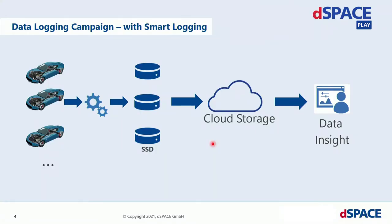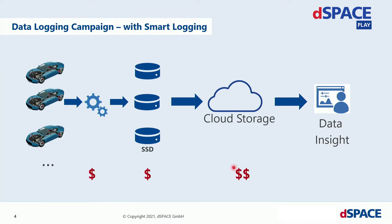So how can we optimize this process? One way would be to get rid of the manual filtering and to shift the filtering into the vehicle. If we use something like a smart logging algorithm inside the vehicle, the idea is to not collect all the data but only the data which is interesting to you. Of course we add some effort for this smart logging, but the cost for storing inside the vehicle and in your cloud environment will be reduced, and the manual filtering will take less effort.